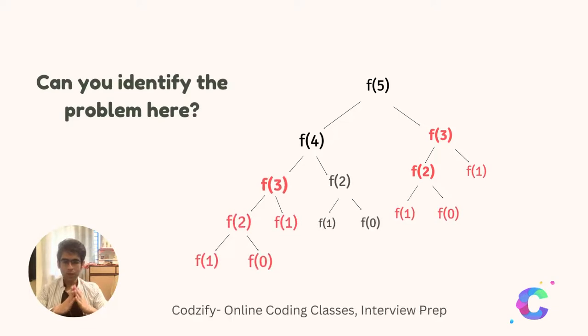In the left part of function f of five, f of three is getting called, and its sub-function f of two is getting called, and inside that f of one is called. In the right side, f of three is again calling f of two, and f of two is again calling f of one. So the same function is getting repeated again and again.